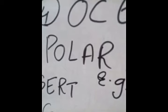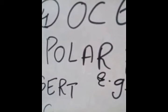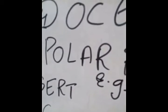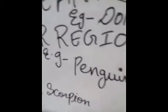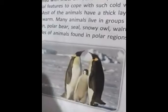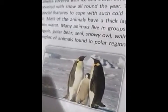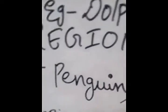To cope with the cold weather, the bodies of polar animals are covered with thick warm fur. Many animals live in groups to protect themselves from the cold. Examples of polar region animals are penguins and polar bears. You have seen pictures of penguins — these are the examples of polar region animals.